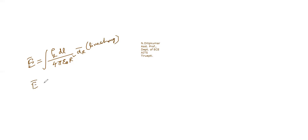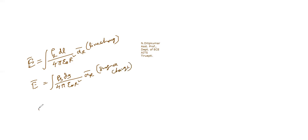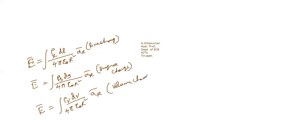The electric field intensity E bar for surface charge is rho_S dS divided by 4 pi epsilon_0 R squared into A_R, and for volume charge it is rho_V dV divided by 4 pi epsilon_0 R squared into A_R. So we have identified the electric field intensity for different charge distributions: line, surface, and volume charges.